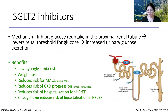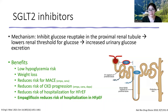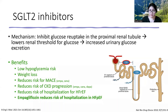SGLT2 inhibitors — empagliflozin, dapagliflozin, canagliflozin — work in your proximal tubule to inhibit glucose reuptake, lowering the threshold for glucose excretion. I tell my patients: this drug is going to make you pee out sugar. The benefits include low hypoglycemia risk in monotherapy, modest weight loss because you're peeing out calories, and a couple of them have shown cardiovascular benefit. They also reduce the risk of chronic kidney disease progression, and all of them reduce the risk of hospitalization for heart failure with reduced ejection fraction.